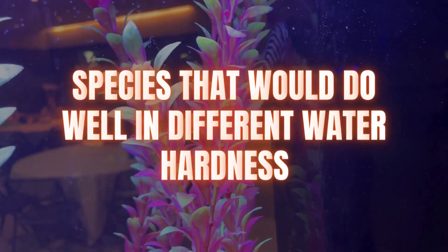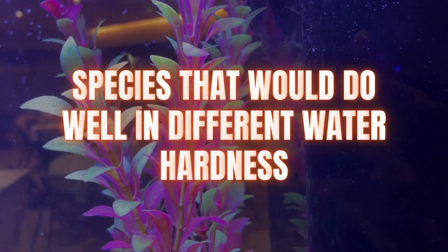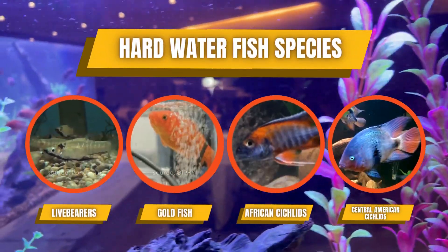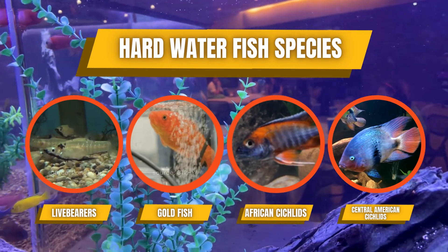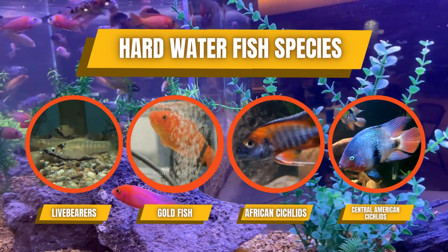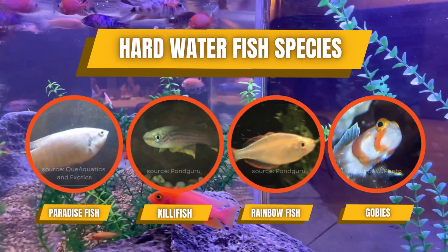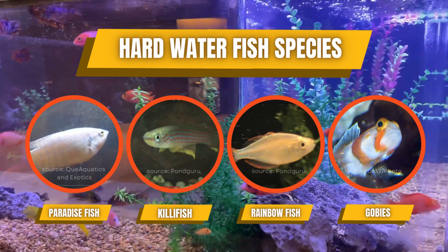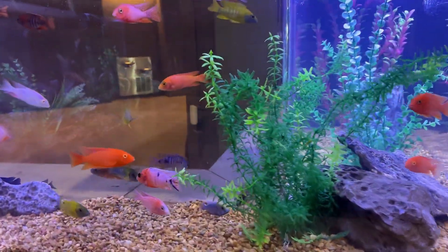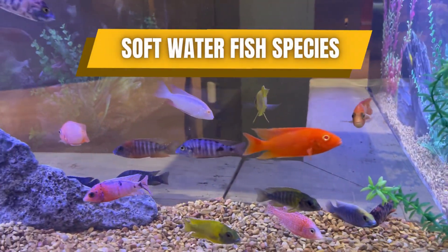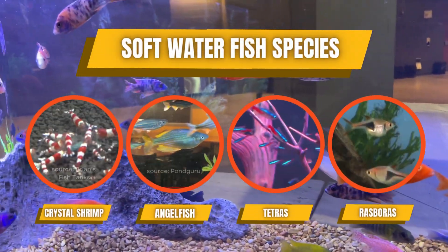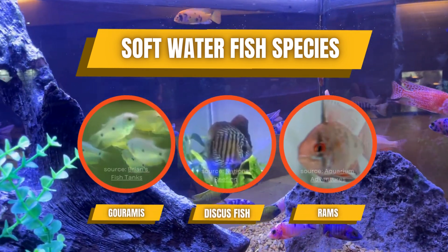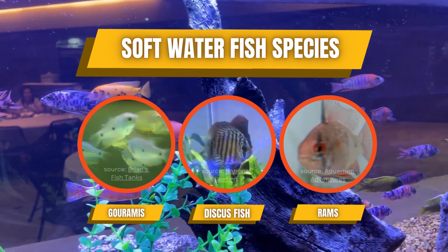Here are some examples of species that do well in different water hardness. Hard water fish species include livebearers like guppies and mollies, goldfish, African cichlids, Central American cichlids, paradise fish, some killifish and rainbowfish, brackish water fish, and gobies. Soft water fish species include crystal shrimp, angelfish, tetras, rasboras, gourami, discus fish, and rams.